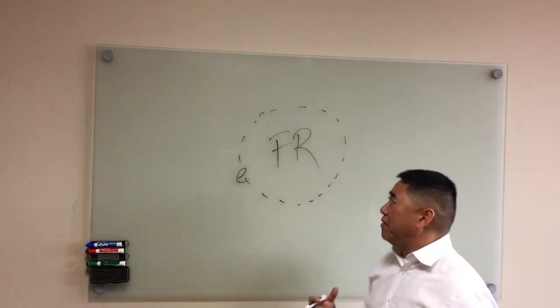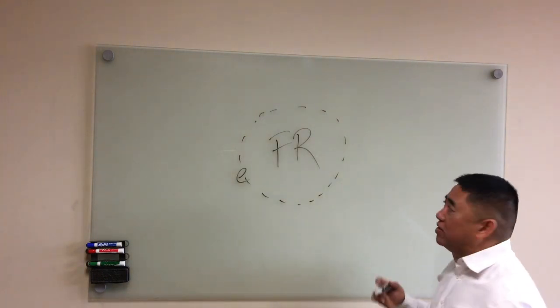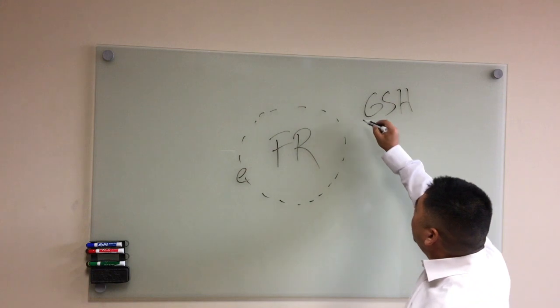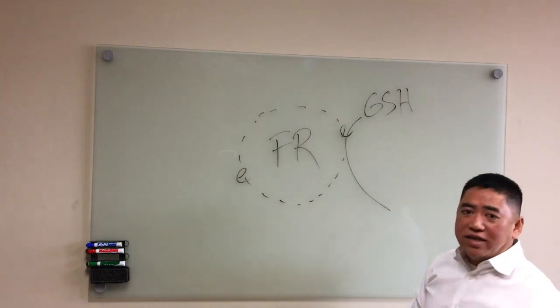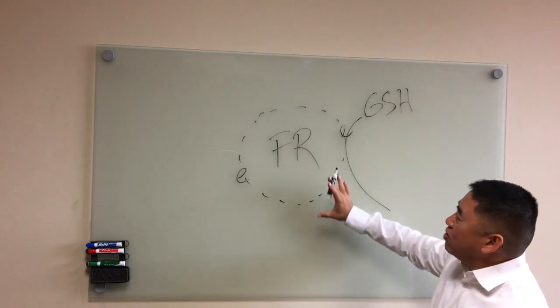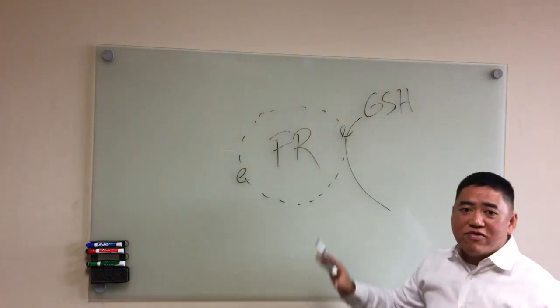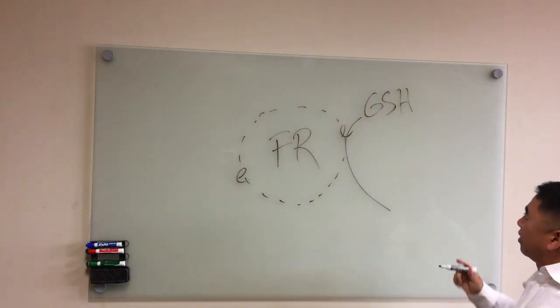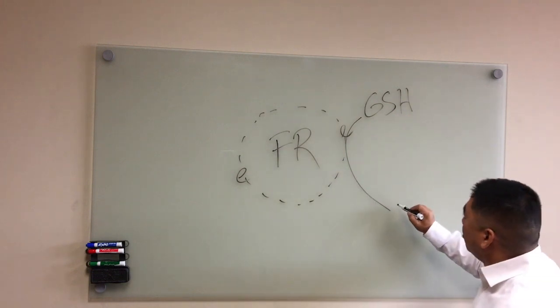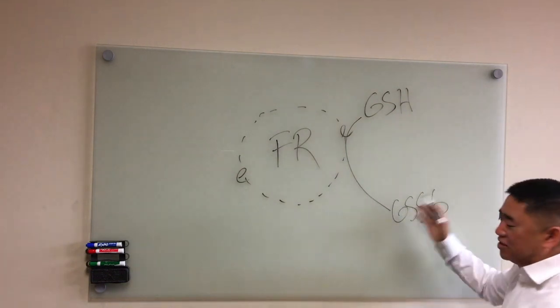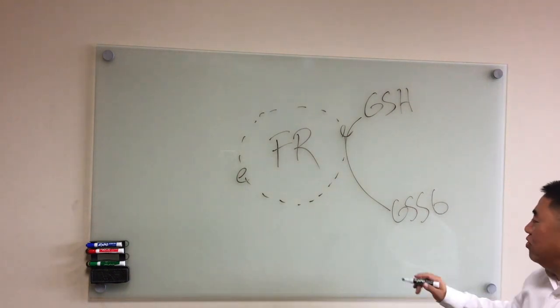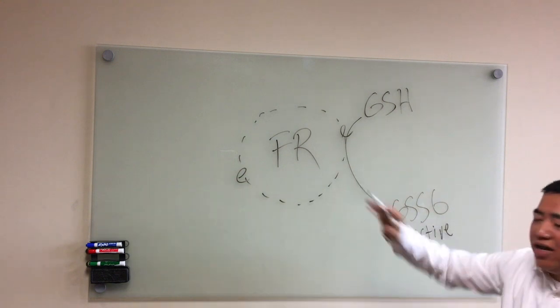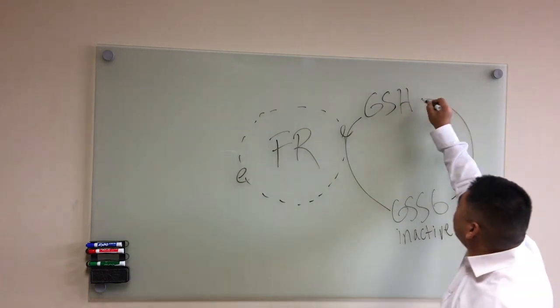What glutathione does - and remember glutathione is abbreviated by GSH - is it actually donates its electron pair, therefore neutralizing this free radical. Now the free radical is happy and it goes away, and it's neutralized. Now in giving away that electron, glutathione becomes oxidized, and this is the oxidized form or abbreviation for glutathione, but this is inactive.